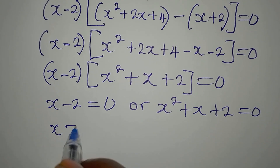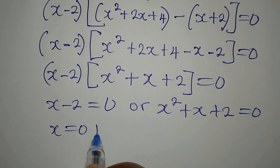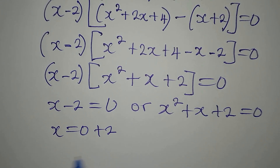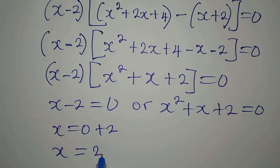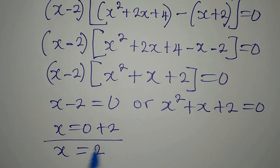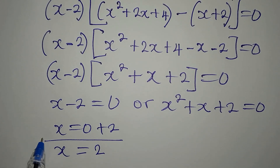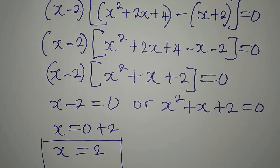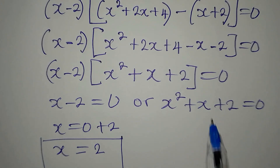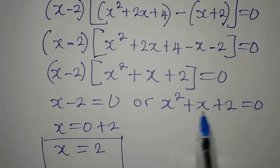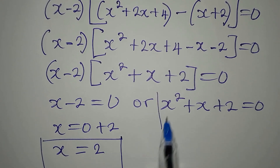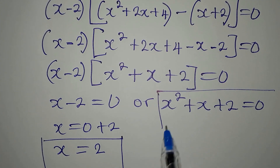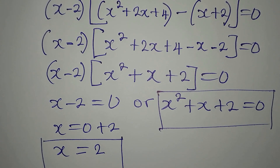Since we're multiplying two factors to get zero, it's either x minus 2 equals zero, giving x equals 2 — that is one of the solutions. To get the other solutions, I will work on the quadratic equation x² plus x plus 2 equals 0.